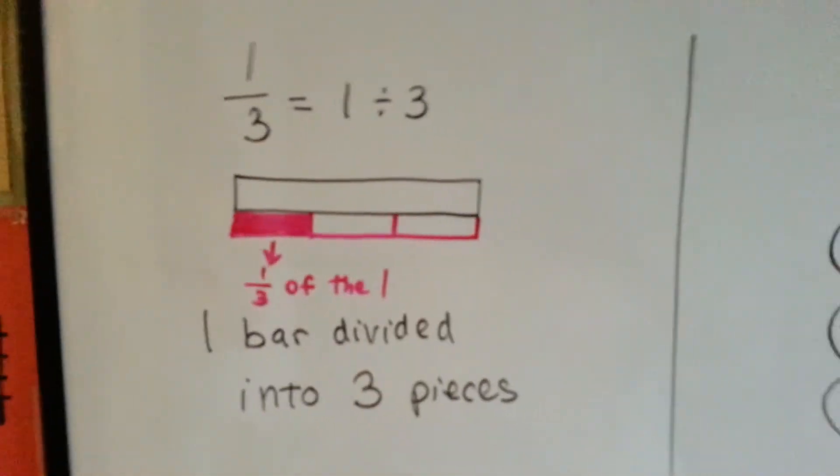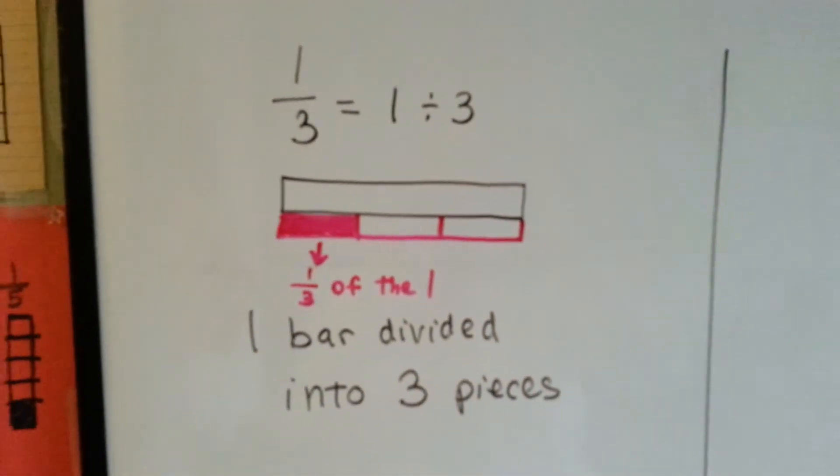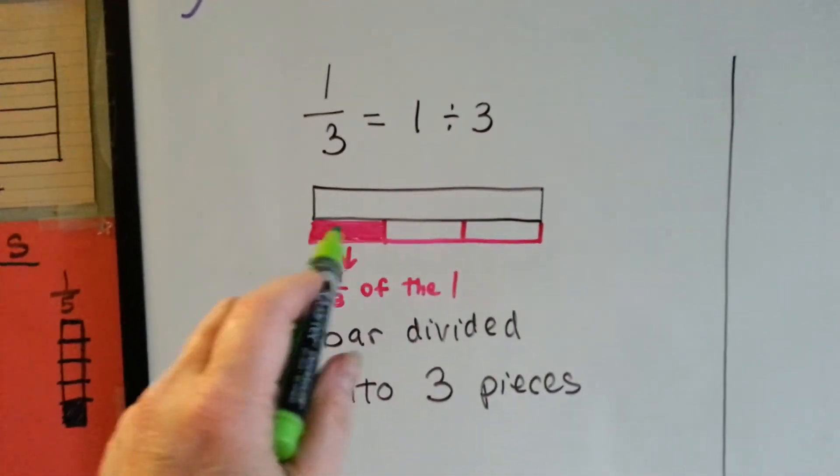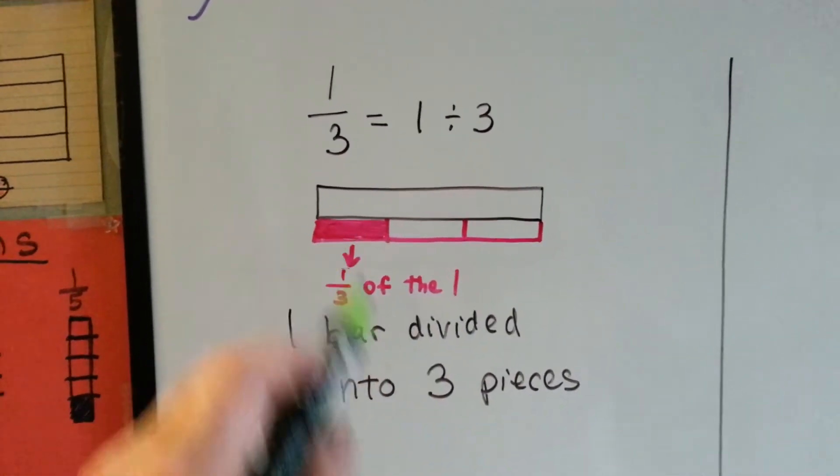One third is equal to one divided by three. If we had one full bar and we divided it into three parts, each part would be a third.